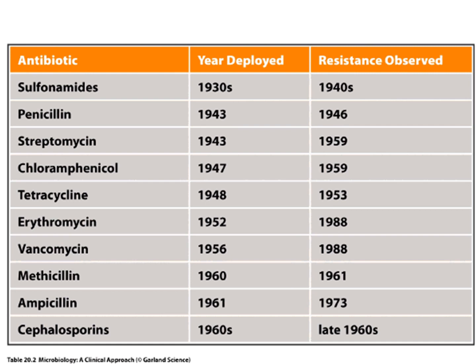This is a rather scary chart showing different antibiotics, the year they were first used, and the year we first discovered resistant bacteria for each one. For example, penicillin was first used in 1943 and only three years later, in 1946, we saw resistant bacteria. Methicillin started in 1960, and just a year later in 1961, we found MRSA — that did not take very long.